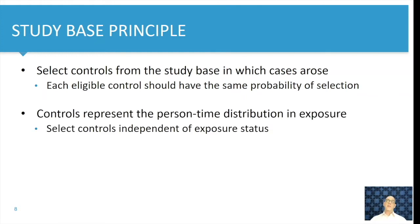The second part of the study base principle is that controls represent the person-time distribution in exposure. So that means that we have to select controls independent from the exposure we are looking for. So for example, if we are studying the effect of eating red meat, then selecting controls from a vegan health club would not make sense because those controls would not share the common distribution of exposure to red meat. You would have then selected controls based on their exposure, in this case, the absence of exposure.